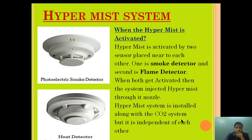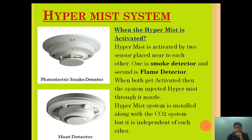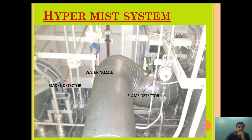When both detectors activate, the system injects Hypermist through its nozzle. The Hypermist is also provided along with the CO2 system, but both are independent of each other. For example, if a small fire takes place near an incinerator, we cannot inject CO2 into the whole engine room. Instead, the Hypermist — being an automatic system — will detect the fire and actuate once both smoke and flame detectors activate, extinguishing the fire locally. Both systems serve as independent fixed fire installations.